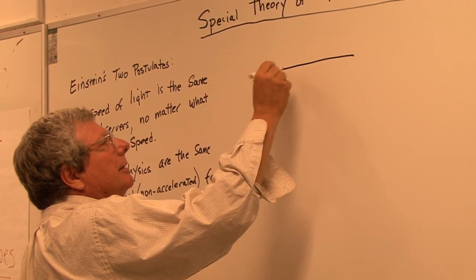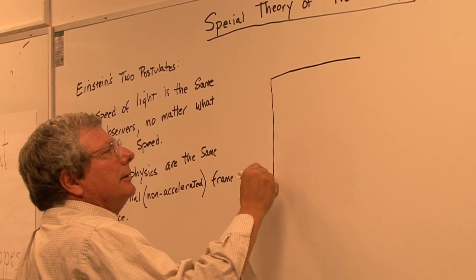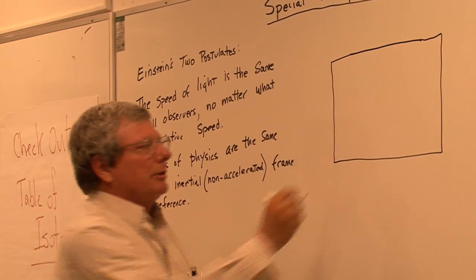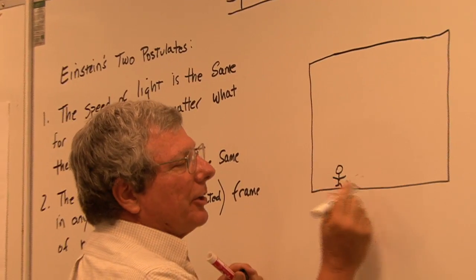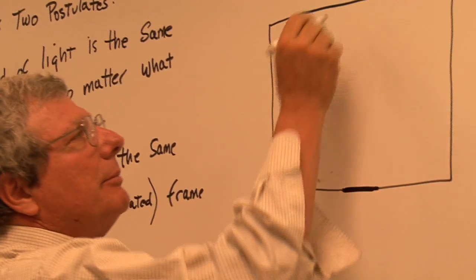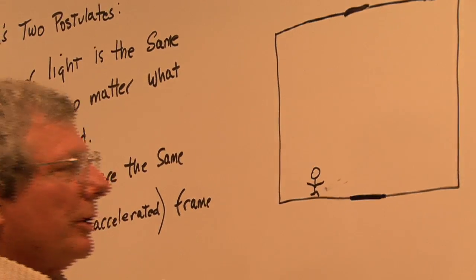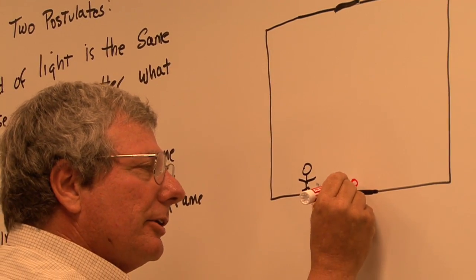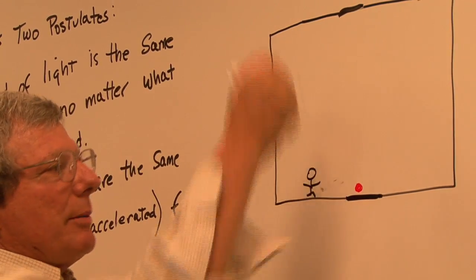Say we're in a spaceship. Here we are in this thing. There's a mirror here and a mirror here. And we're going to play around with a photon, one photon that's going to be going back and forth.